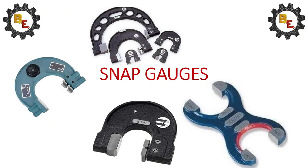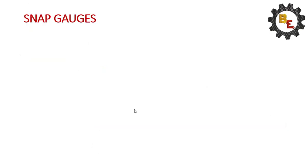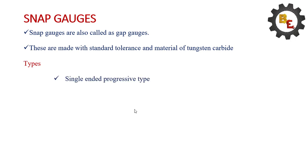Snap gauges. Snap gauges are also called gap gauges. These are made to standard tolerance and materials of tungsten carbide. Let me see the types: single-ender, progressive type, double-ender type, adjustable frame type, split type, and customer specified.